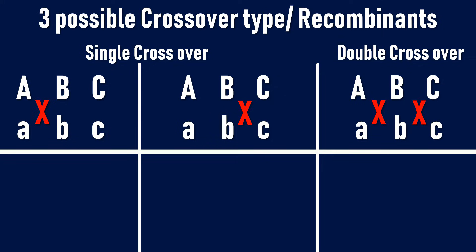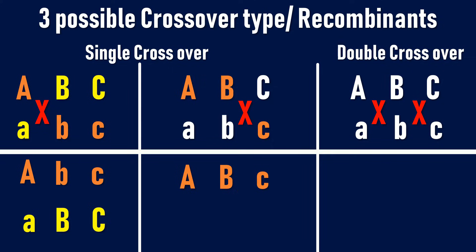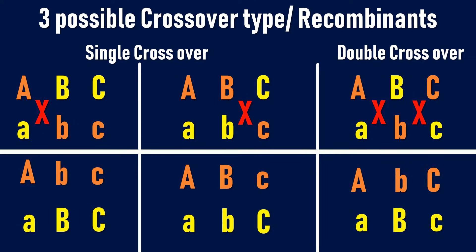The recombinants obtained by a single crossover between genes A and B will be capital A, small b, small c and small a, capital B, capital C. Similarly, a single crossover between genes B and C will give the recombinants as capital A, capital B, small c and small a, small b, capital C. A double crossover between genes AB and BC will give the recombinants as capital A, small b, capital C and small a, capital B, small c.